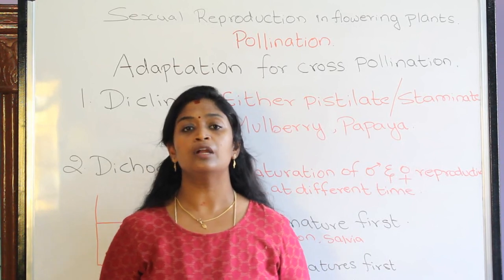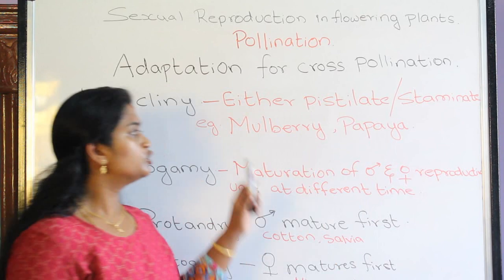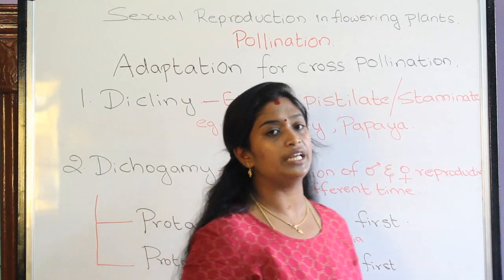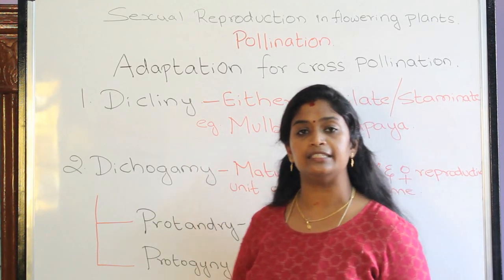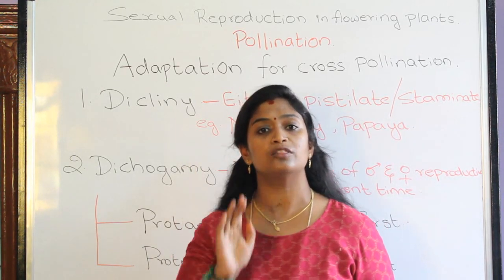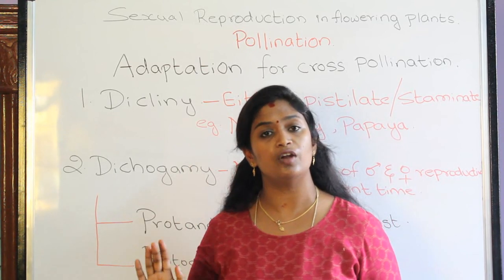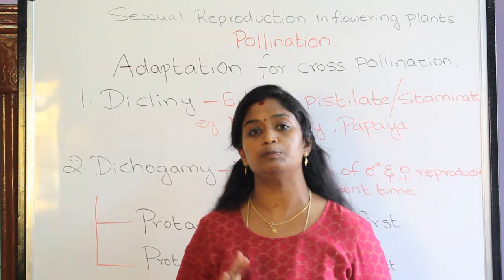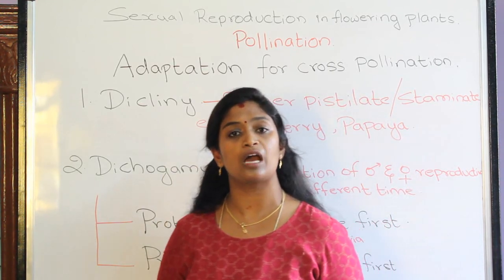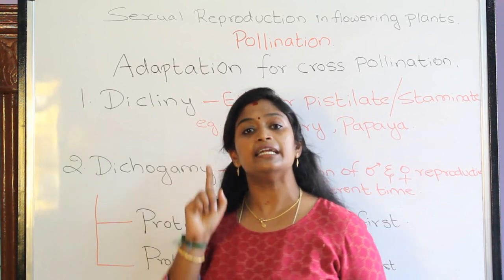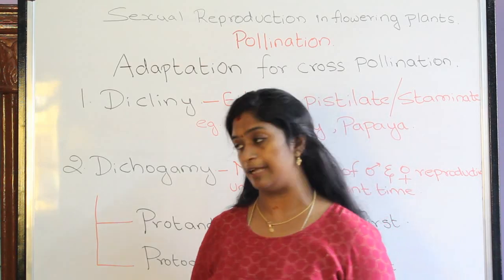In this video we will study about the adaptations of cross-pollination. Before studying the first adaptation, we need to know what cross-pollination is. The transfer of pollen grain from the anther of one flower of one plant to the stigma of another flower of another plant of the same species is called cross-pollination. It is otherwise called as xenogamy or allogamy, and it depends on external agencies such as abiotic or biotic agencies.